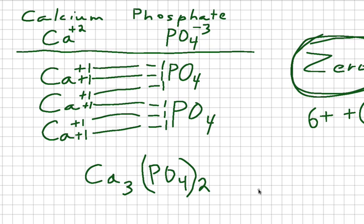Now there's a lot quicker way to write this that you're going to love. Let me explain that to you. You still have to remember that calcium is a plus two ion and that phosphate is a minus three ion.